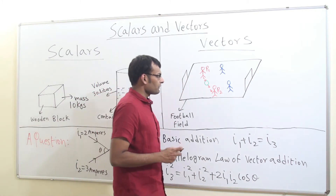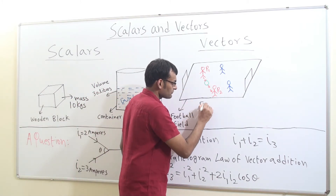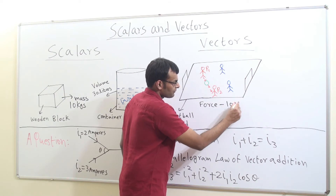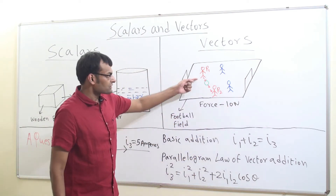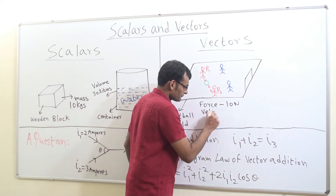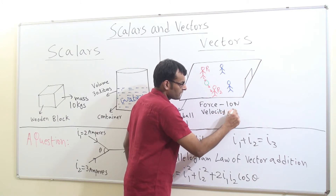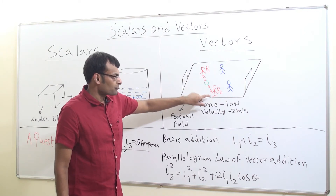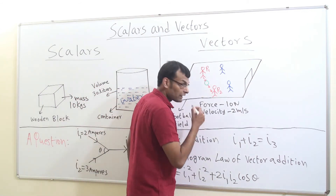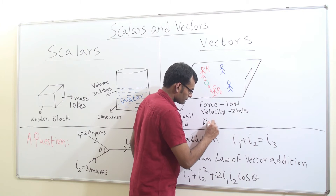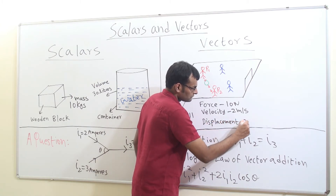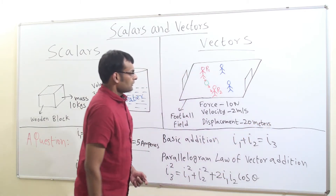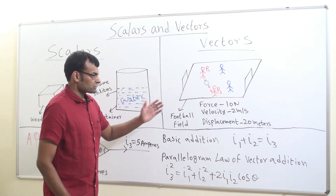Person P1 kicks the ball with a force — the first vector quantity — of 10 newtons. Once the force is applied, the ball moves with a velocity of 2 meters per second. As the ball is kicked from P1 it moves to P2, and the length between P1 and P2 is indicated by displacement, taken to be 20 meters. So three physical quantities have come into picture: force, velocity, and displacement.